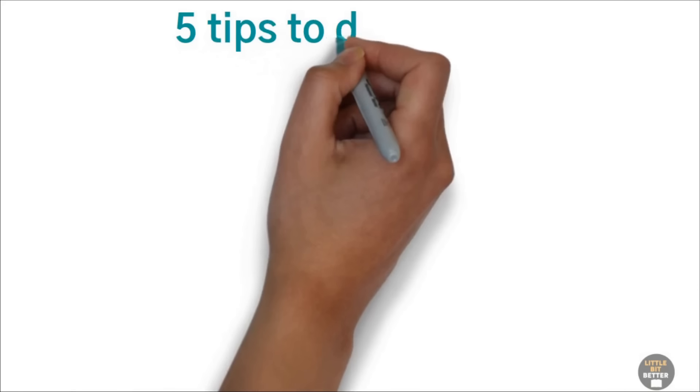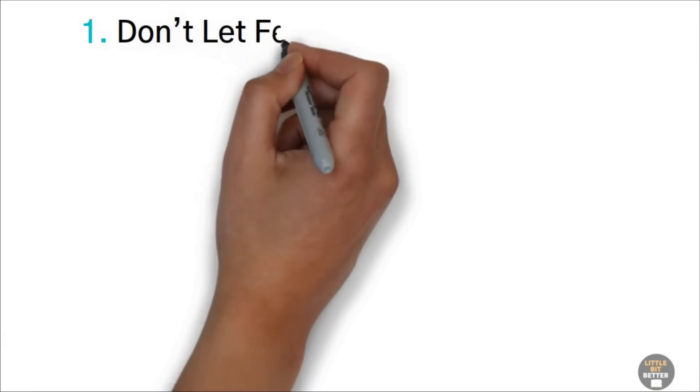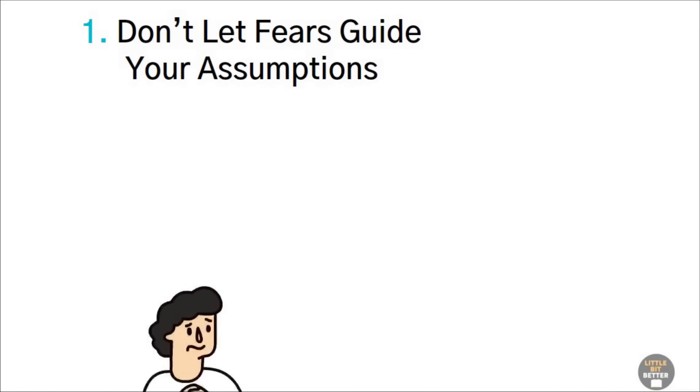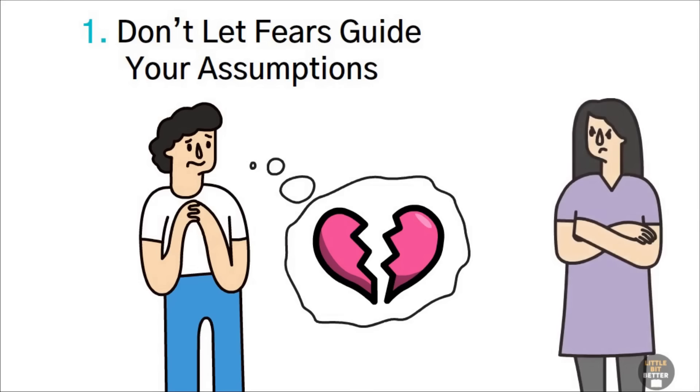Here are five tips to deal with the perception problem. One, don't let fears guide your assumptions. People often assume that whatever they fear, the other side intends to do.